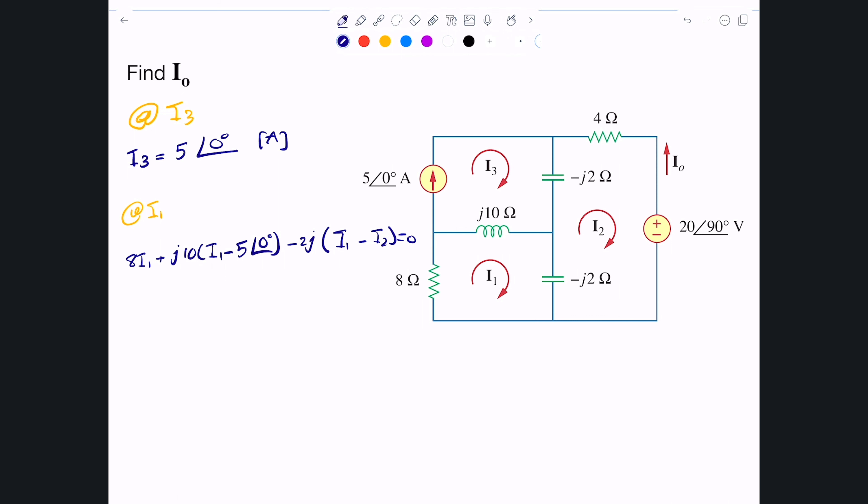Then we'll do some algebra so that we isolate I1 and I2 with coefficients. That will be the following which is (8 + j8)I1 + j2·I2 equals j50. So that's the first equation here for the two unknowns that we have.